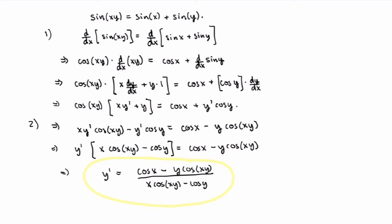Notice that y-prime is expressed in terms of both x and y — not as an explicit function of x alone. That's expected because you started with an implicitly defined function. When you do implicit differentiation, you almost always end up with y-prime as a relation in x and y. Implicit differentiation is very useful — we'll use it next week to calculate derivatives of inverse functions.